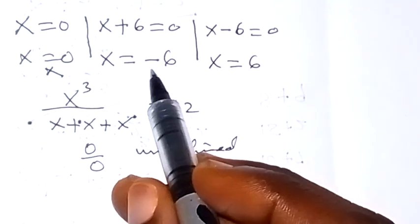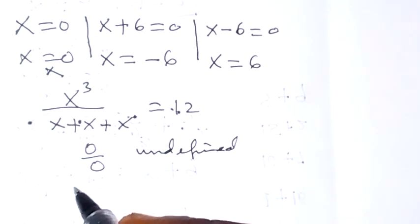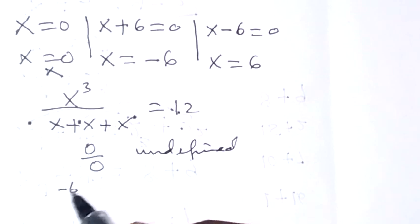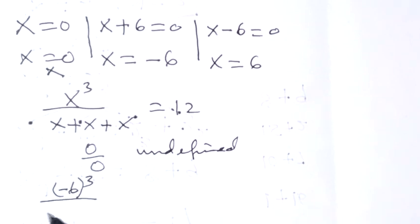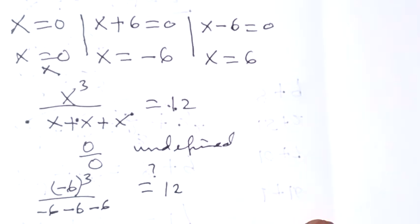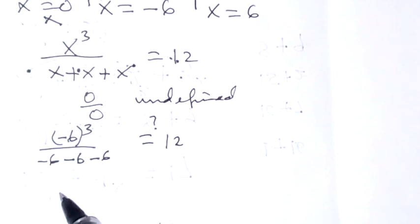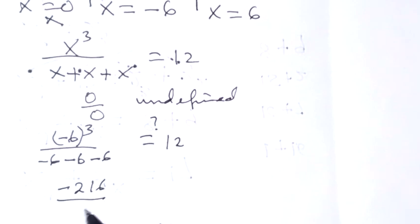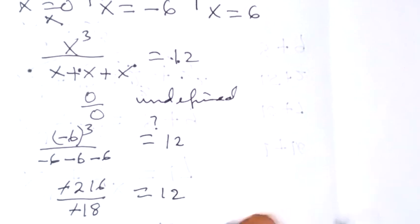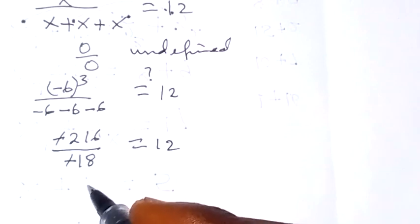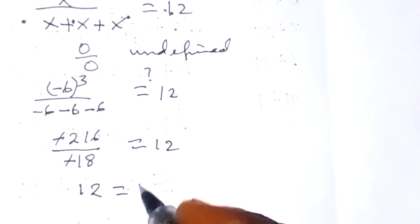When we check for x equals to minus 6, we put minus 6 in: minus 6 raised to power 3 over minus 6 plus minus 6 plus minus 6. That is minus 216 divided by minus 18. The negatives cancel, and 216 divided by 18 gives us 12, so this equals 12.